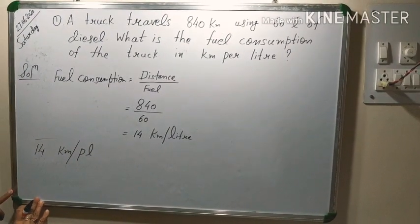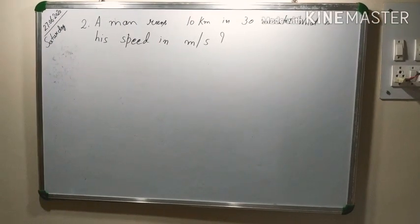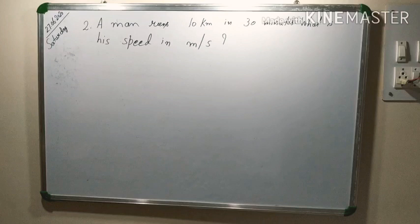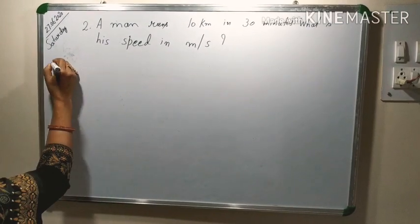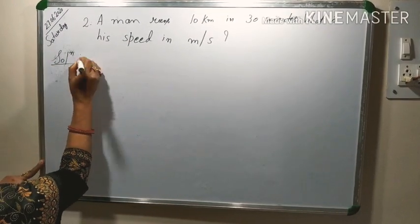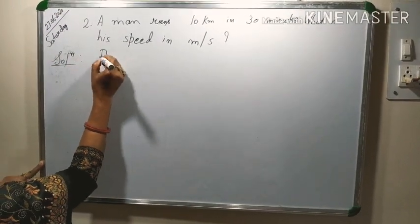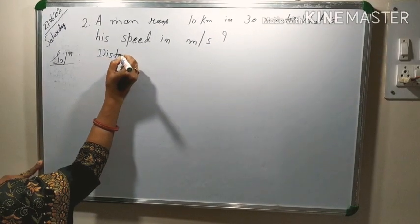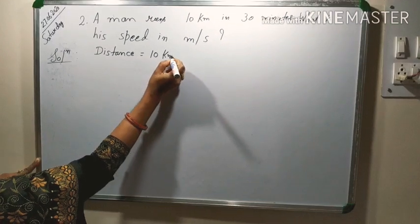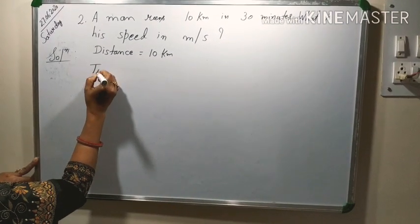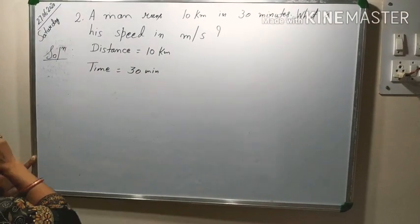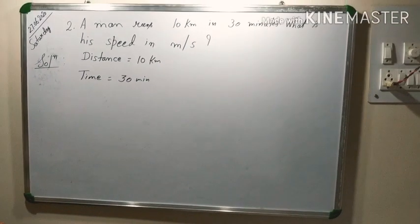Second question was, a man runs 10 km in 30 minutes. What is his speed in meter per second? So as I told, first we have to mention given information here. In question, given distance is equal to 10 km and time is given equal to 30 minutes. Speed is asked in meter per second.